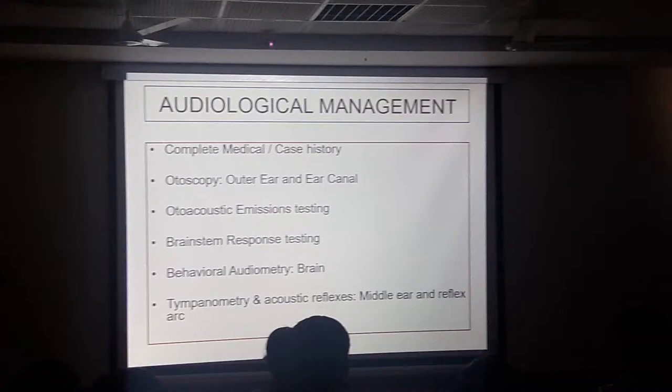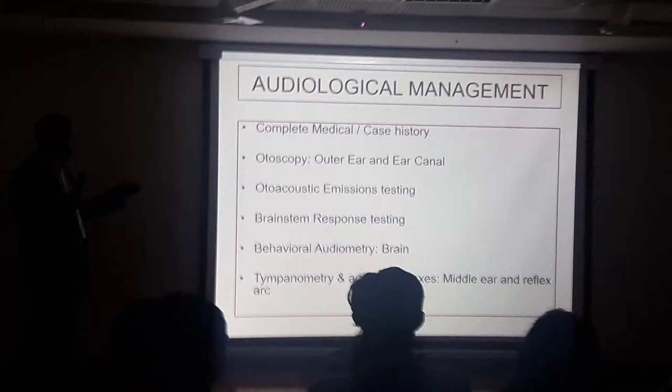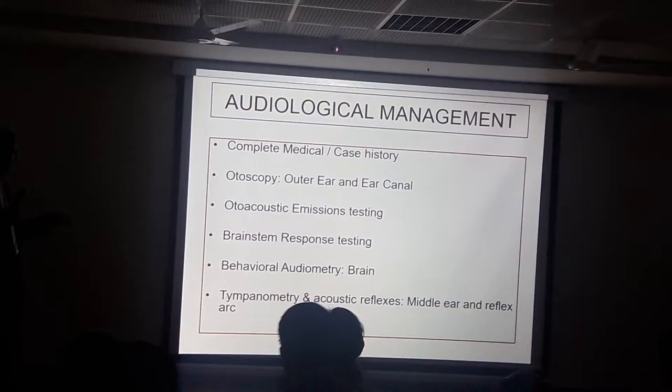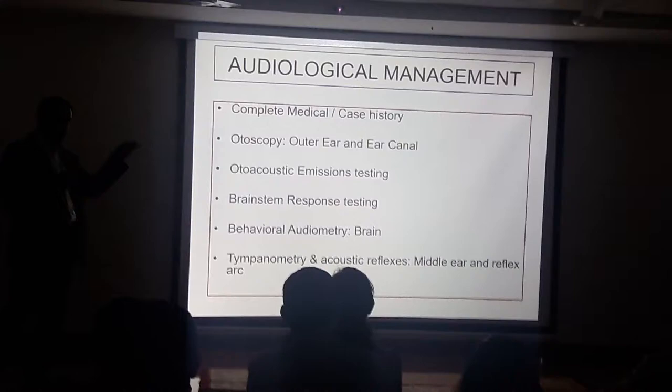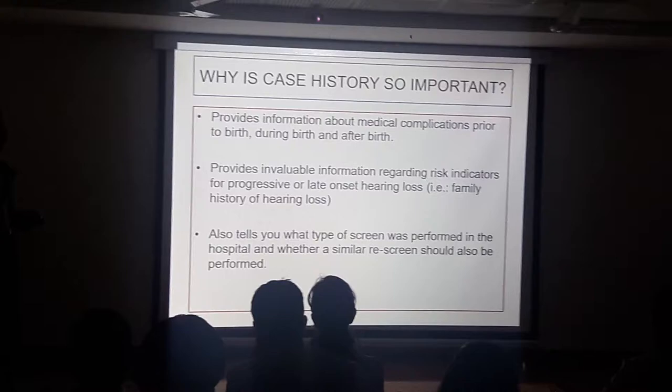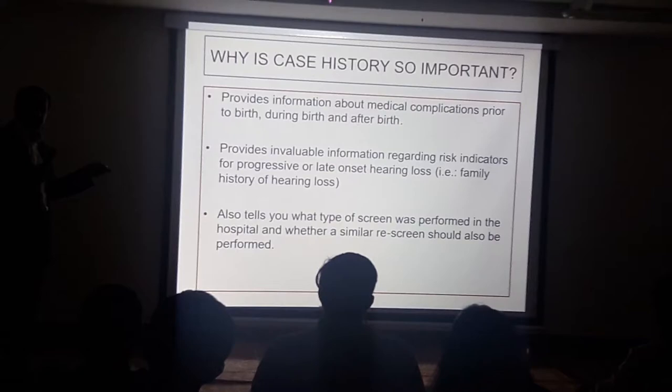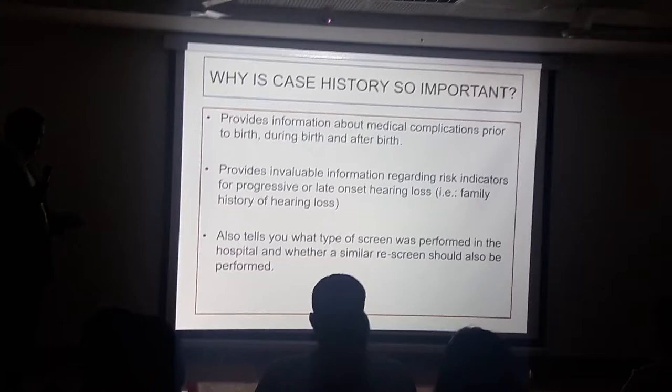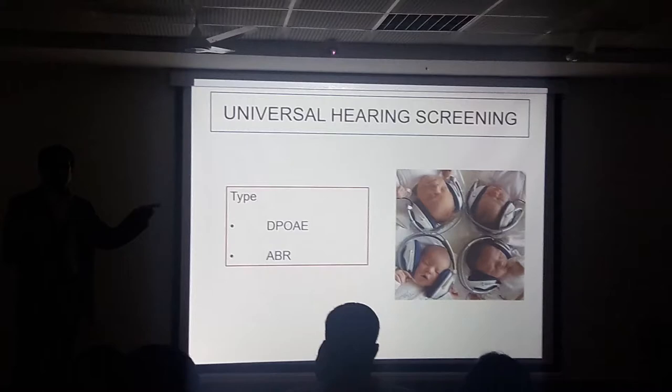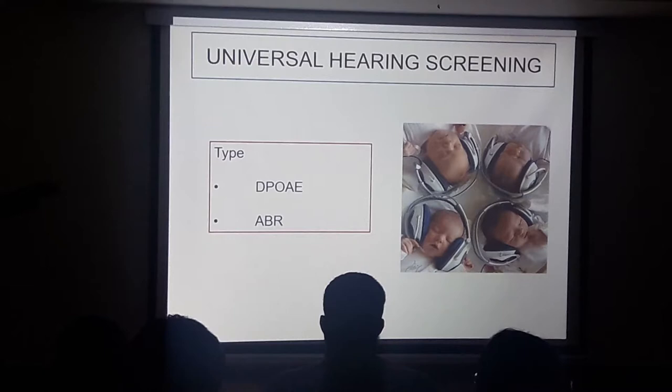Now how do you manage it? Typical management starts with a complete medical history and otoscopic examination. Otoacoustic emissions testing, behavioral audiometry for checking what is actually reaching the brain, and acoustic reflexes are all performed. Case history is so important because there are so many possible causes — genetic causes, brain injury, or other insults to the patient. It is also important to find whether the child passed universal newborn hearing screening, since if only OAEs were done and passed, the ABR was not done — and auditory neuropathy would only have been detected by ABR.